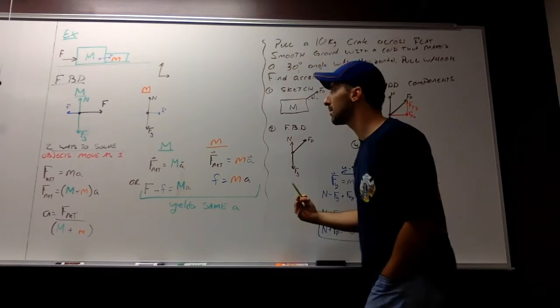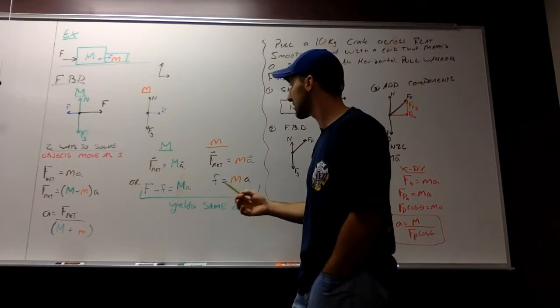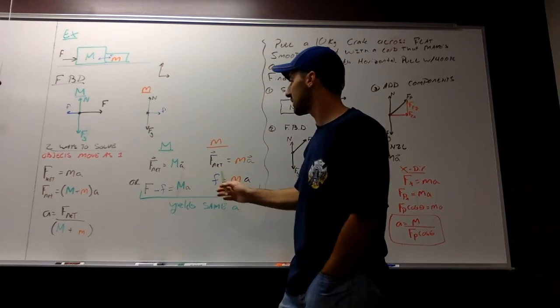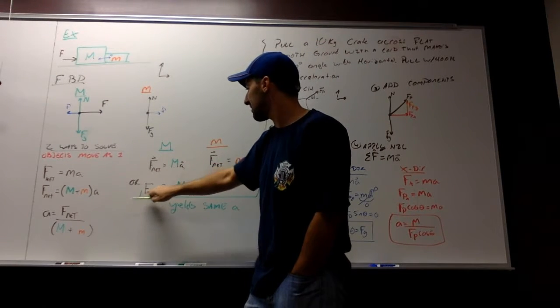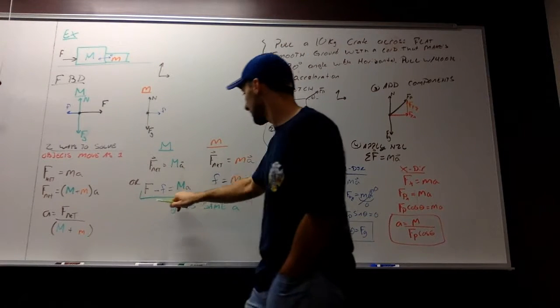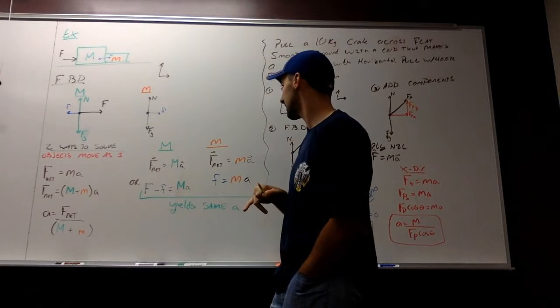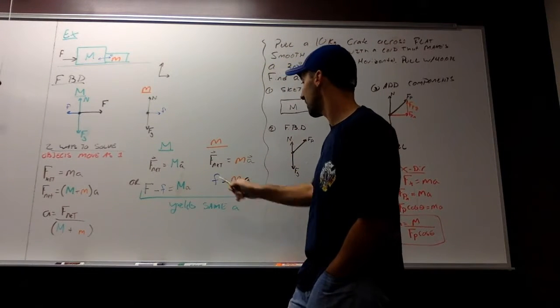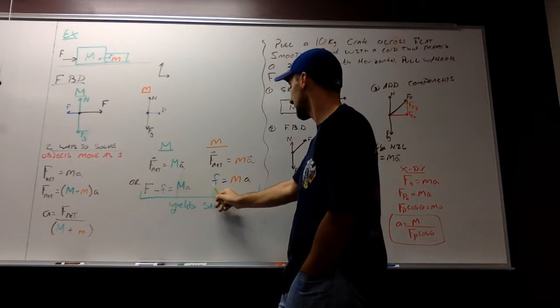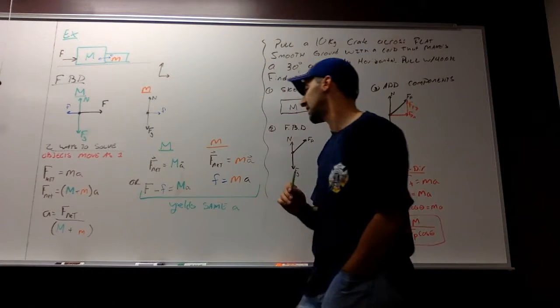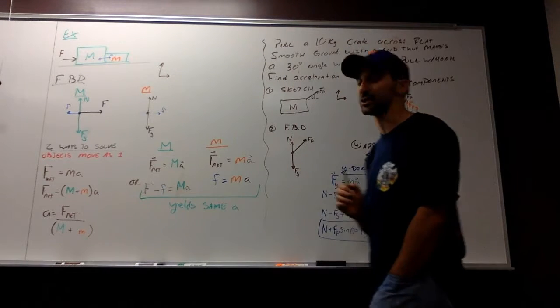We could have made it more complicated and examined both objects independently, and then found the answer together. So here, F net equals Ma. Of my big mass, my big force, F, minus my contact force, equals the big mass times the acceleration. Likewise, I have the small mass, F net equals Ma, looking at free body diagram number 2, little f equals Ma. I've left this in this form, but if you solve for A, you should yield the same result. I think you should test that to make sure.